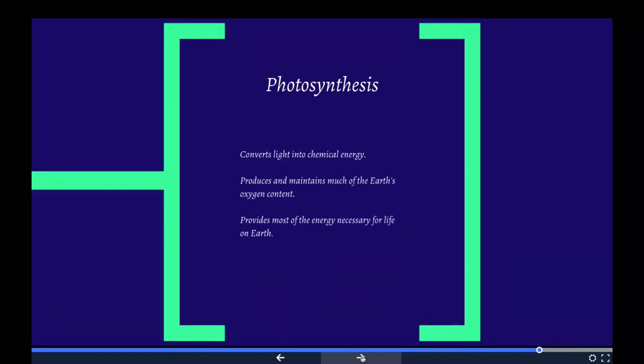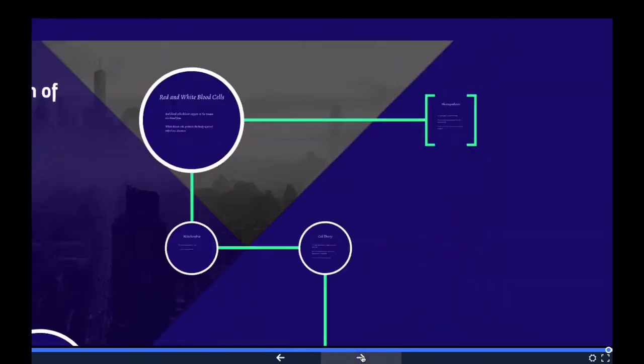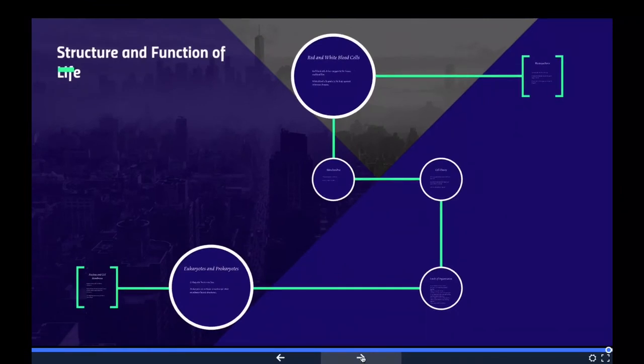With photosynthesis, if you can only know one thing, it's that it converts light into chemical energy. That'll help you with at least one question. Also want to know that photosynthesis produces and maintains much of the Earth's oxygen content and provides most of the energy necessary for life on Earth. There we go, that's structure and function of life.